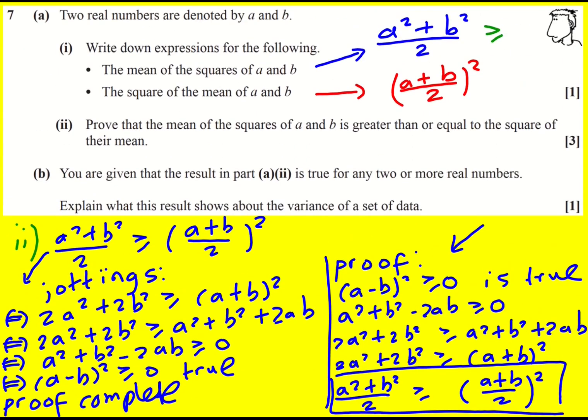So we're given that this result is true. Now what does this mean about the variance of a set of data? So actually the variance is precisely, in general for two or more, it's the mean of the squares minus the square of the mean. Normally write it like this.